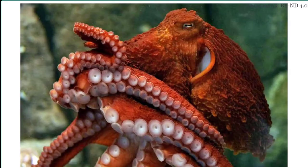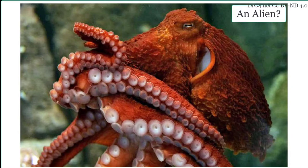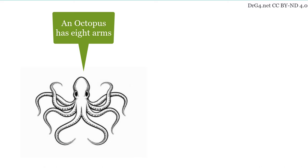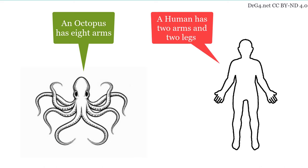The most alien-like animal on Earth is probably an octopus. How is an octopus different? An octopus has eight arms. A human has only two arms and two legs.